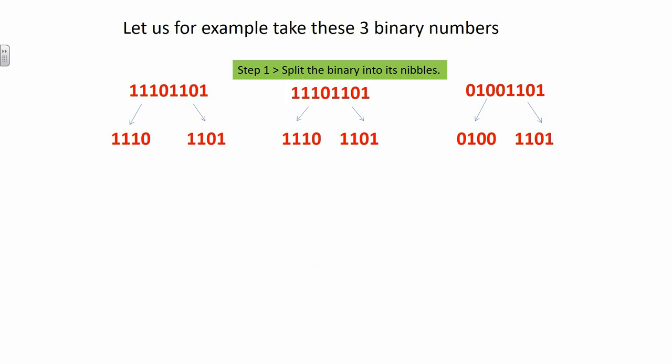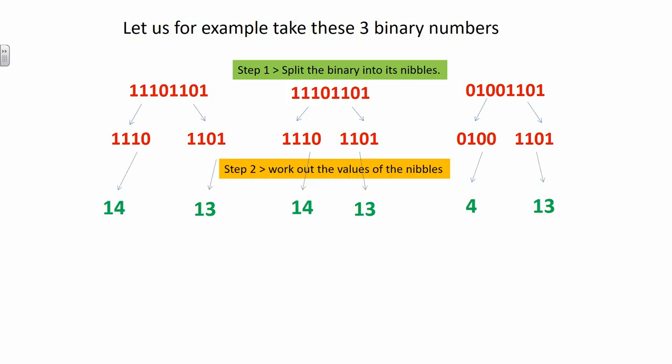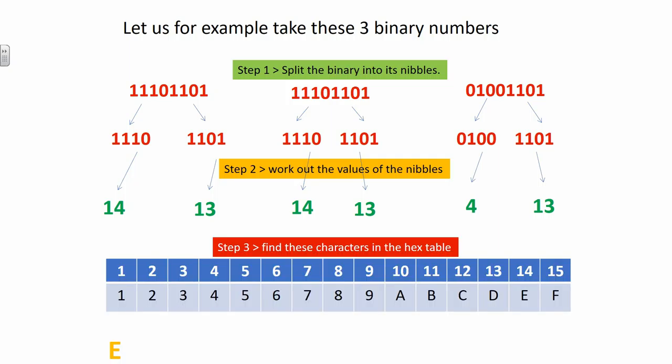Now we do it in reverse — binary to hex. Split the binary number in half: four bits on the left, four bits on the right. Convert each nibble to its denary value: for example, 14, 13, 14, 13, 4, 13. Then find which character sits at that position in the hex table — E is the 14th character. Pause the video and complete the remaining characters: 13, then 14, then 13, then 4, then 13.